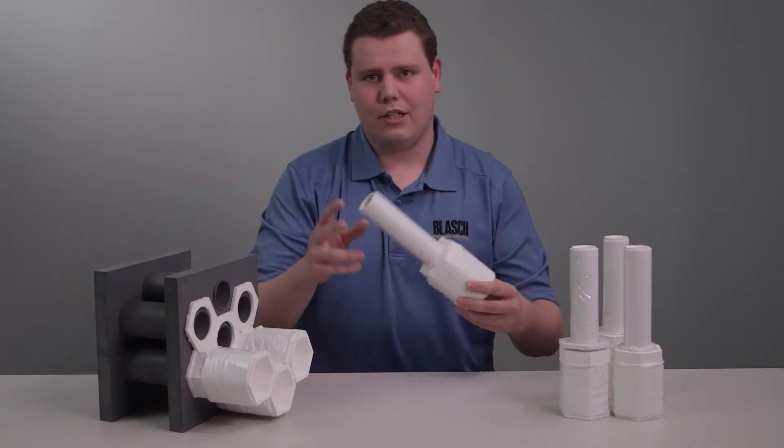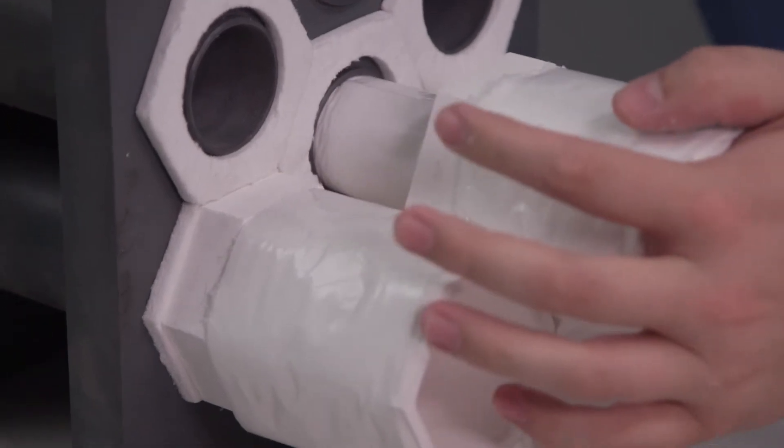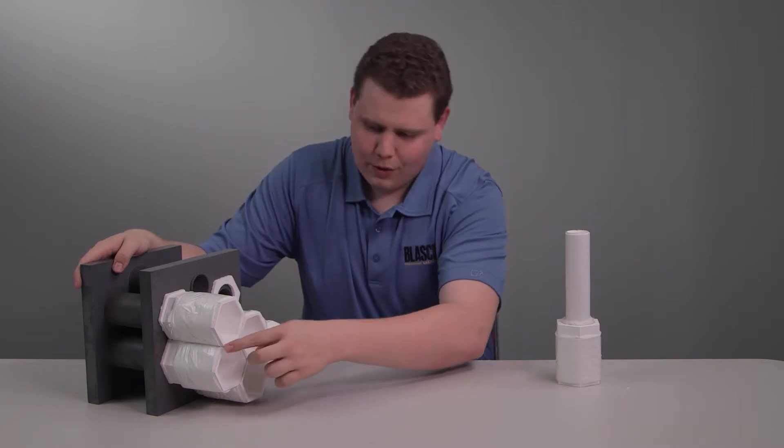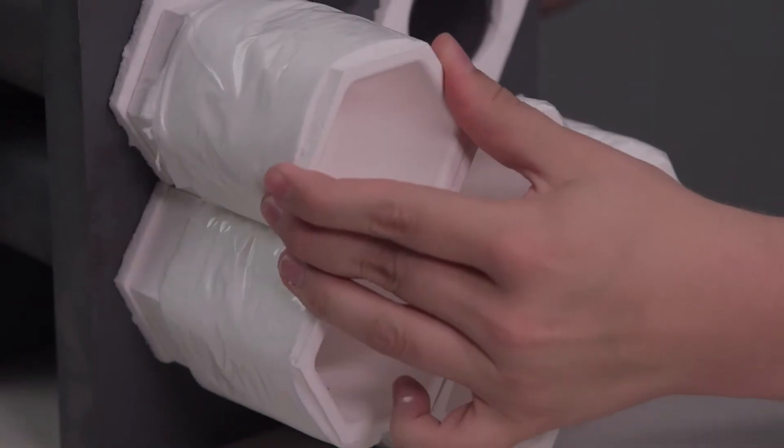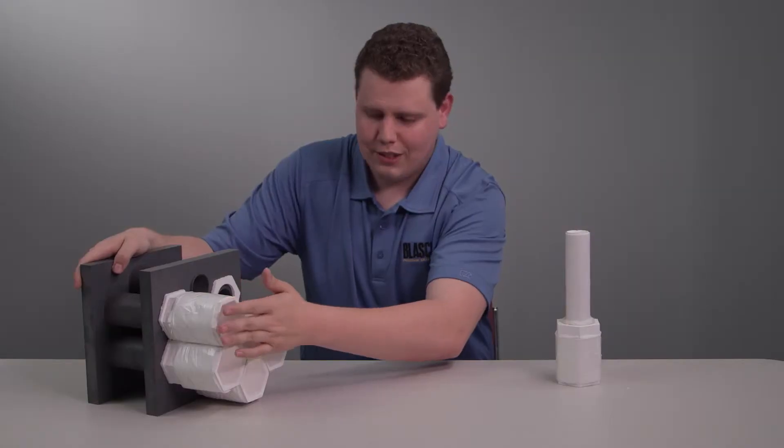Once those are in place, you're going to take the ferrule, simply put it inside the tube, and slide it in. Now that you've got them in, you want to make sure that your gaps are nice and parallel, and that when you push them in, they're nice and flush against the tube sheet.